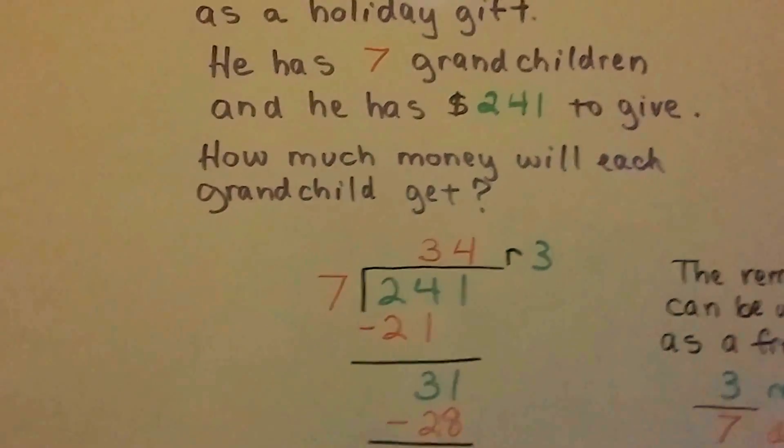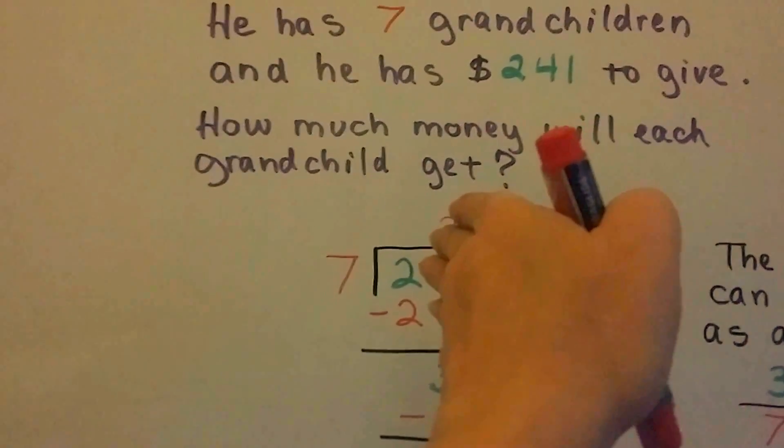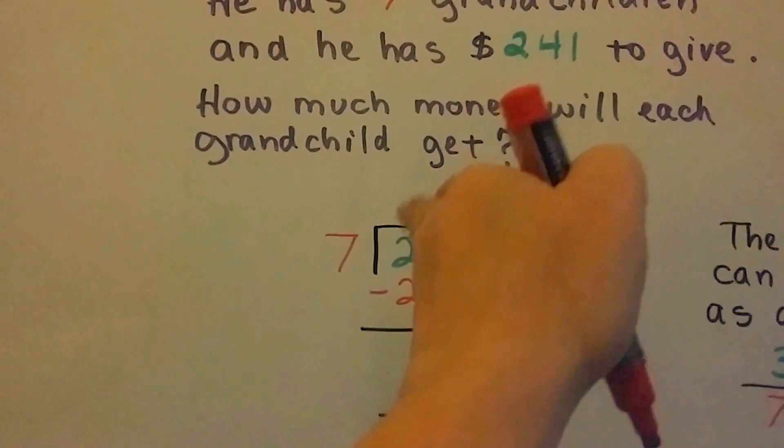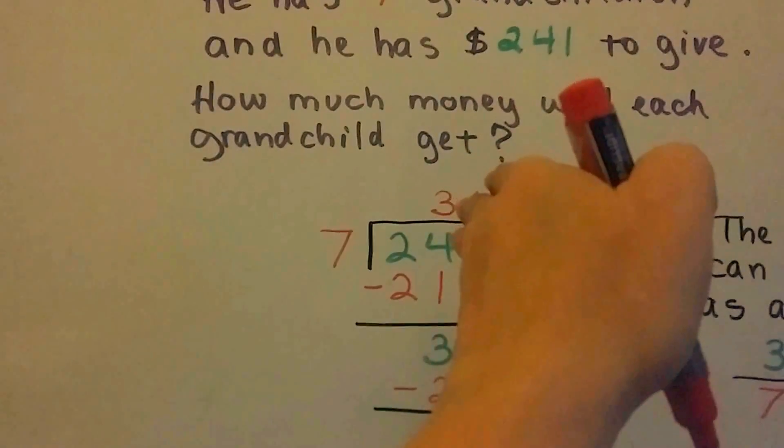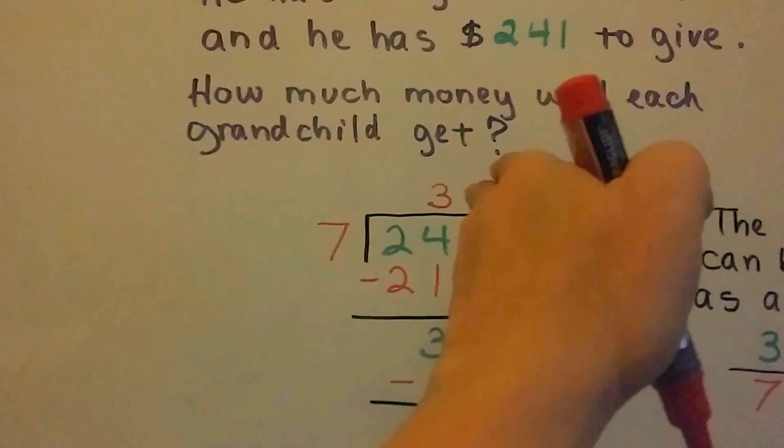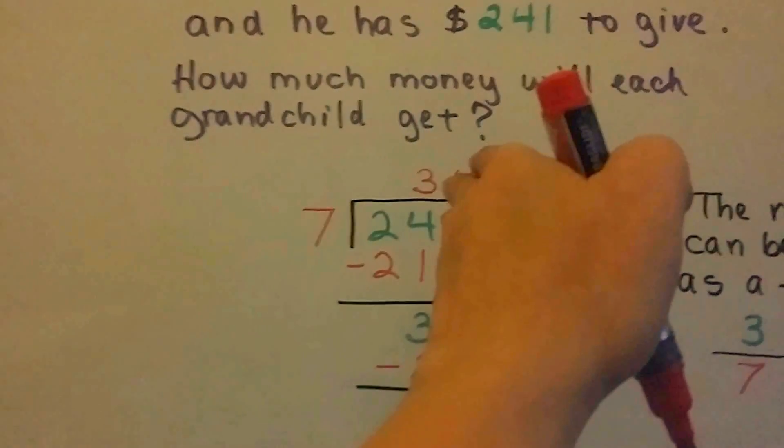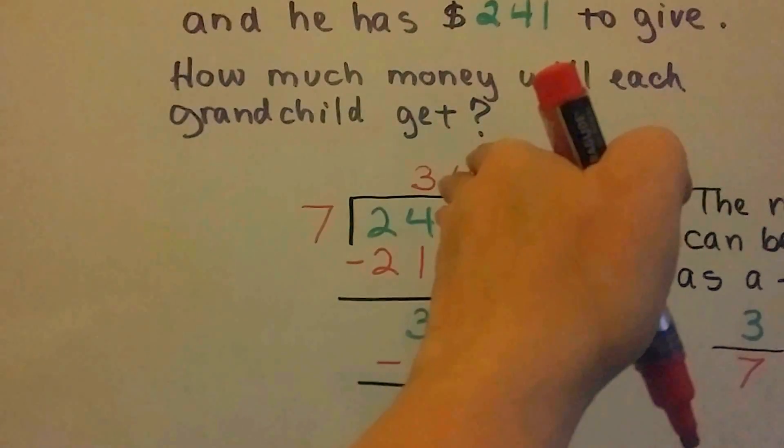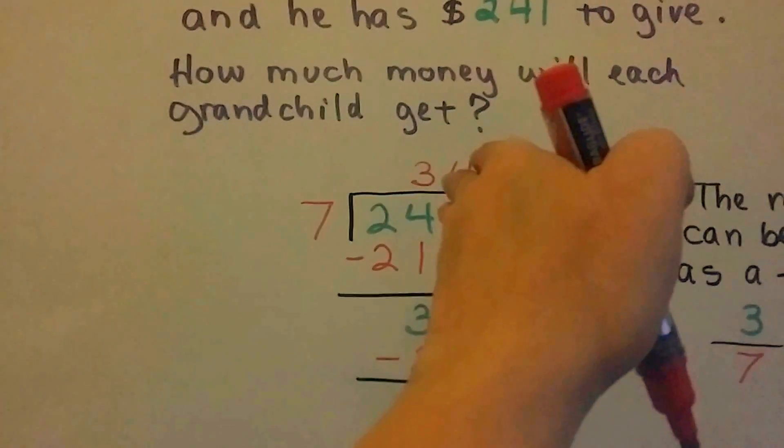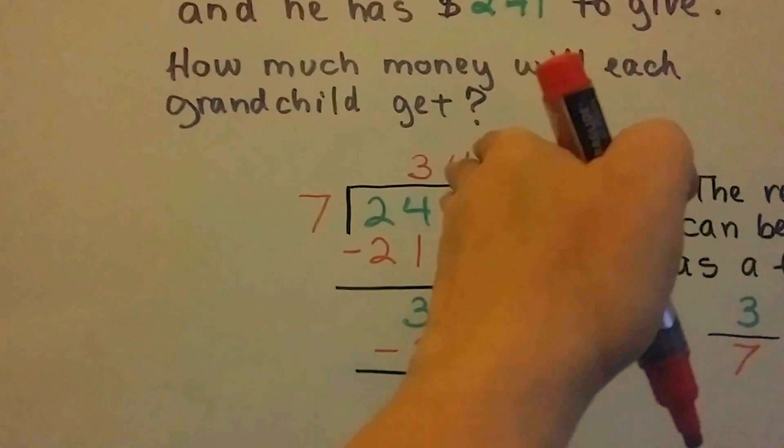And we ask ourselves, how many times can 7 fit into 2? None. So we don't put an answer above the 2. How many times can 7 fit into 24? 7 times 3 is 21. That's perfect. So we put the 3 above the 4, because we're putting the 7 into 24. And we do 7 times 3, which is 21.